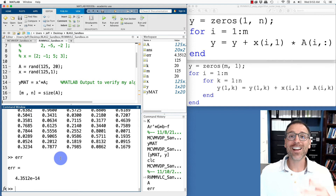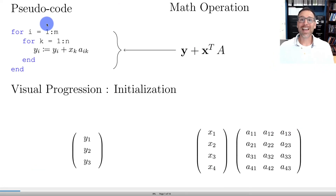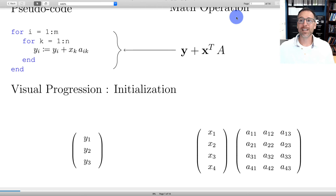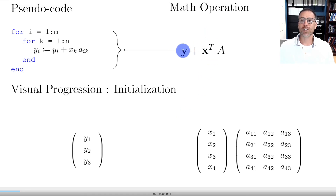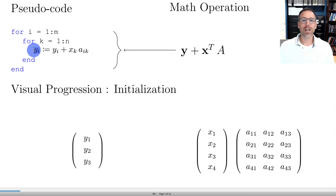This raises questions about where that error comes from — that gets into more advanced topics covered later in the course. The mathematical operation we're targeting is y + x^T * A. In computer science language, this is a doubly nested for loop: the outer loop runs through rows, the inner loop through columns, and we update each individual entry of the output.